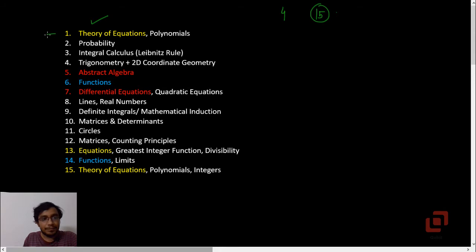Question number one was a simple question based on the theory of equations. In this question you are given a cubic polynomial, and the coefficients of this cubic polynomial are a function of parameter t, and you have to determine for what value of t does that polynomial have real roots.